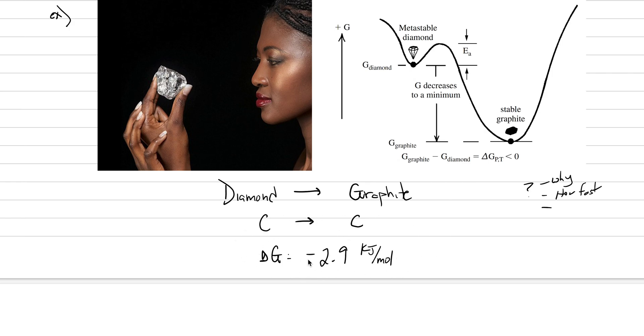The answer is no. Diamonds shouldn't exist at the Earth's surface because the Gibbs free energy of this reaction of going from this reactant to this product actually has a delta G equals minus 2.9 kilojoules per mole. So since it has this negative delta G, this means graphite is thermodynamically stable at the Earth's surface.